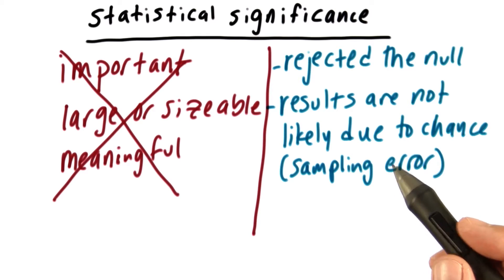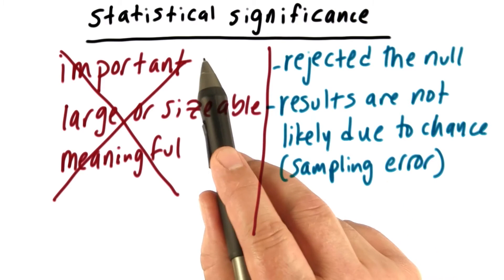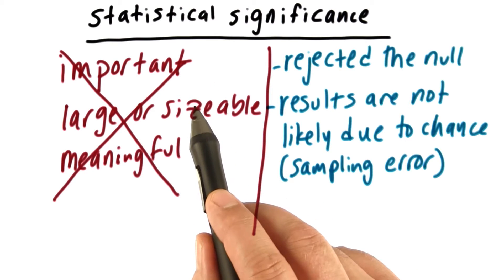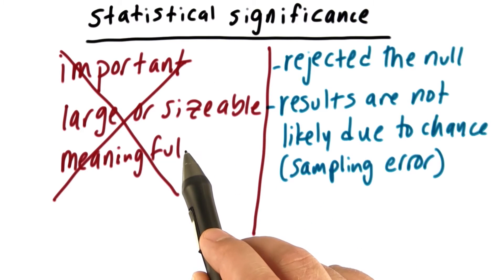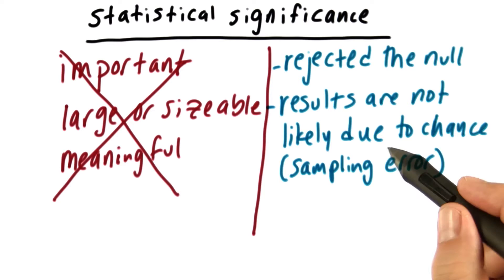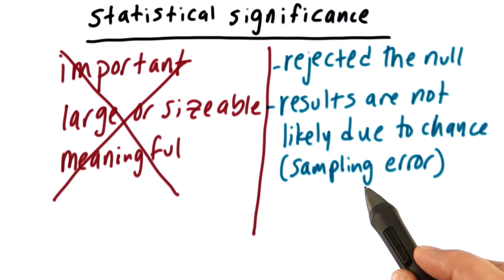The important point is to note when you see the word statistical significance, it doesn't mean that our results were important, that they were large or sizable, or that they were even meaningful. All it means is that the results are probably not due to chance. In other words, we've ruled out random chance or sampling error as an explanation of our results. That's an important point to keep in mind.